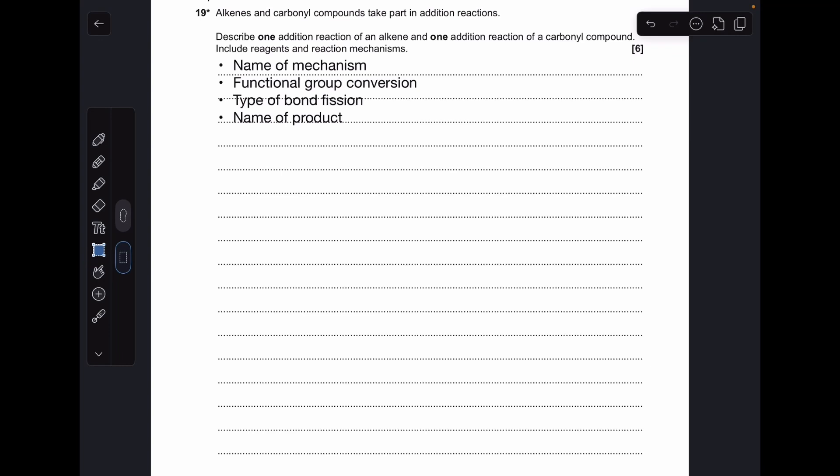Before I go through my answer to this question, there are lots of possible answers you could give. There's some key points I want to make: we're going to include the name of the mechanism, the functional group conversion that's taking place, the type of bond fission that's happened, and the name of the product.